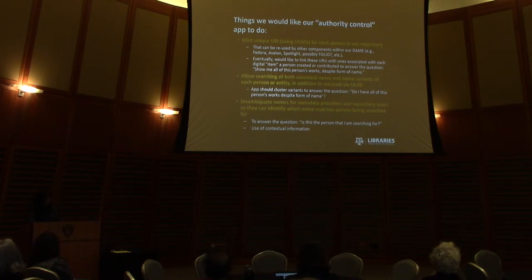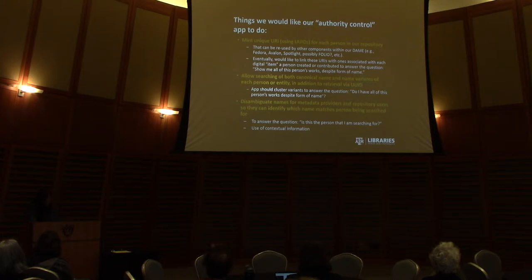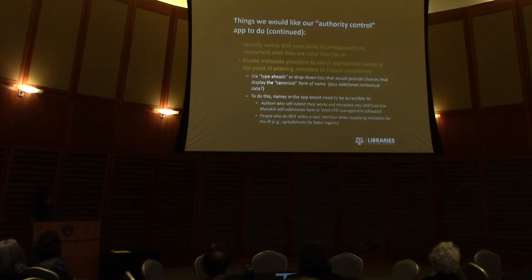Our more immediate concern is to get a prototype up and running first. We'd like it to search various names and identifiers to answer the question: do I have all this person's works? We'd like it to utilize links within the app to link out to external authorities or sources, pull in contextual data to answer the question 'is this the person I'm searching for?' to help disambiguate them. It will be an internal tool for catalogers to figure out where cleanup is needed and what names need to be disambiguated.